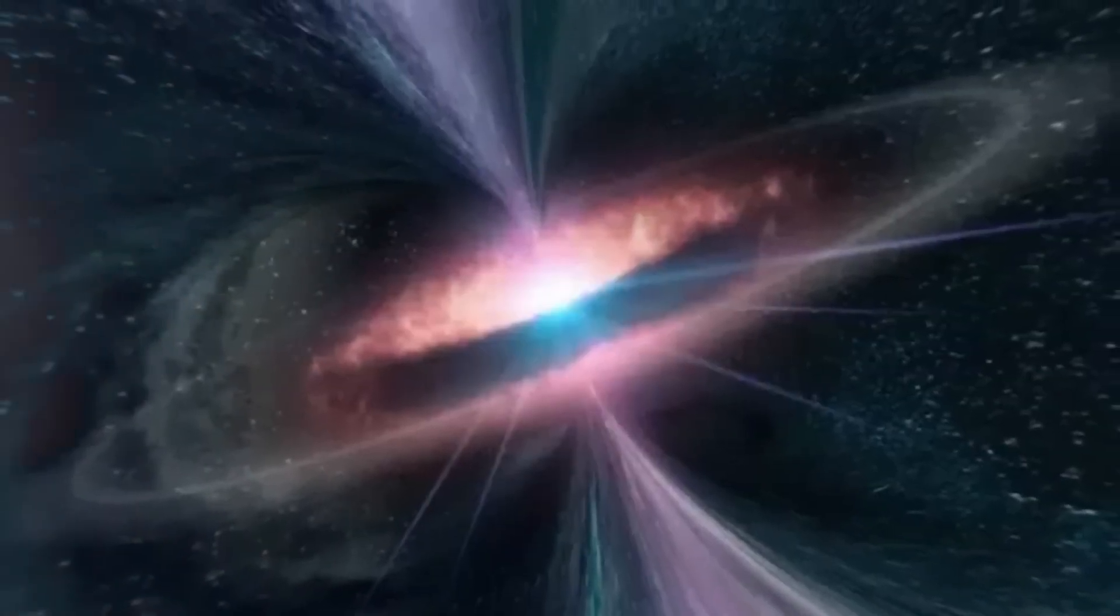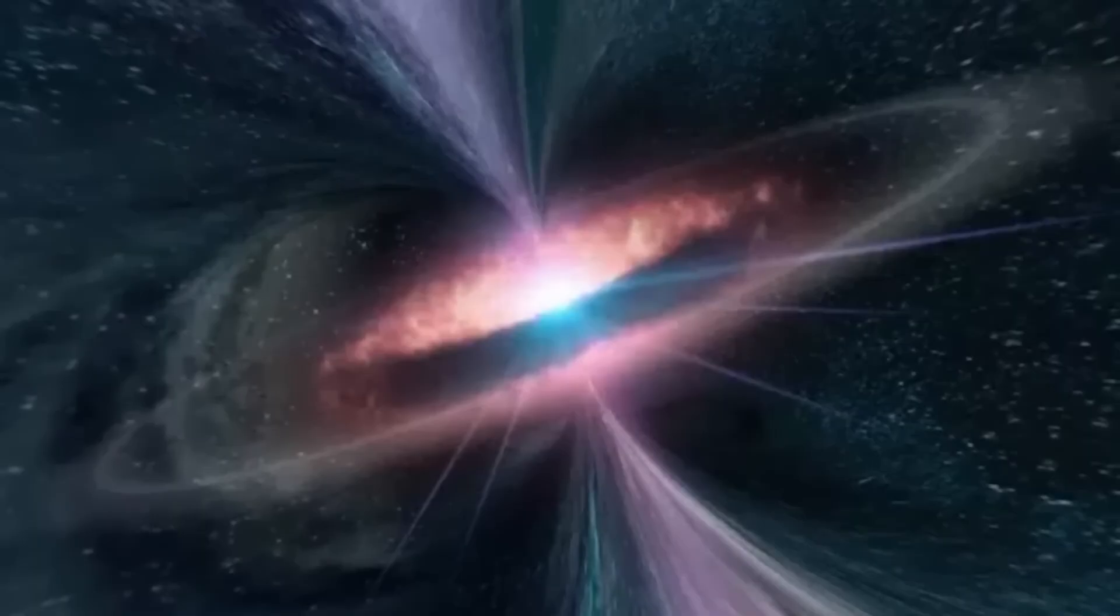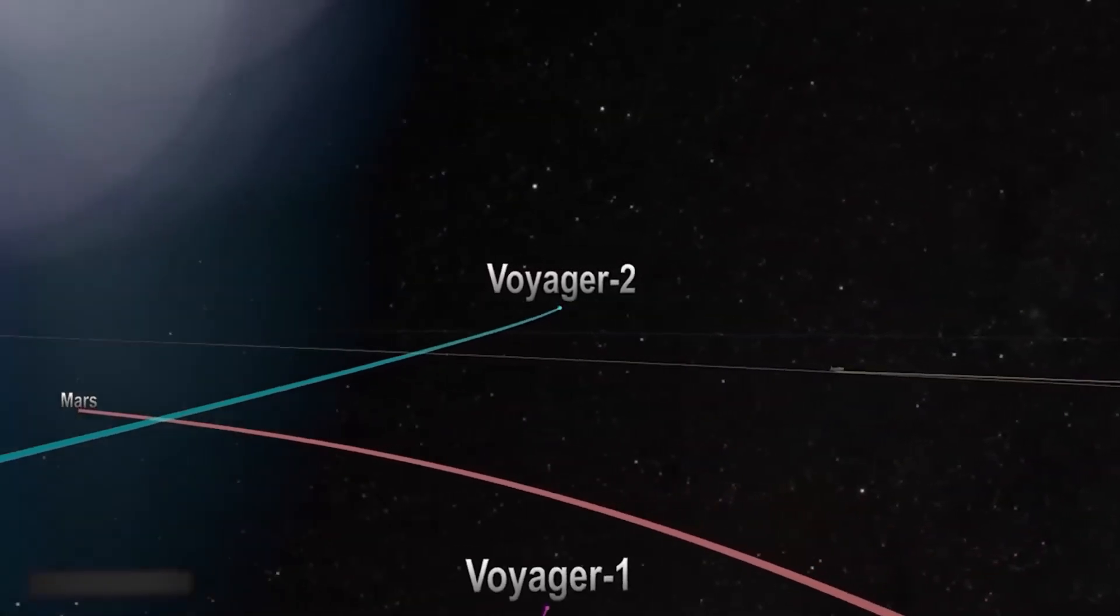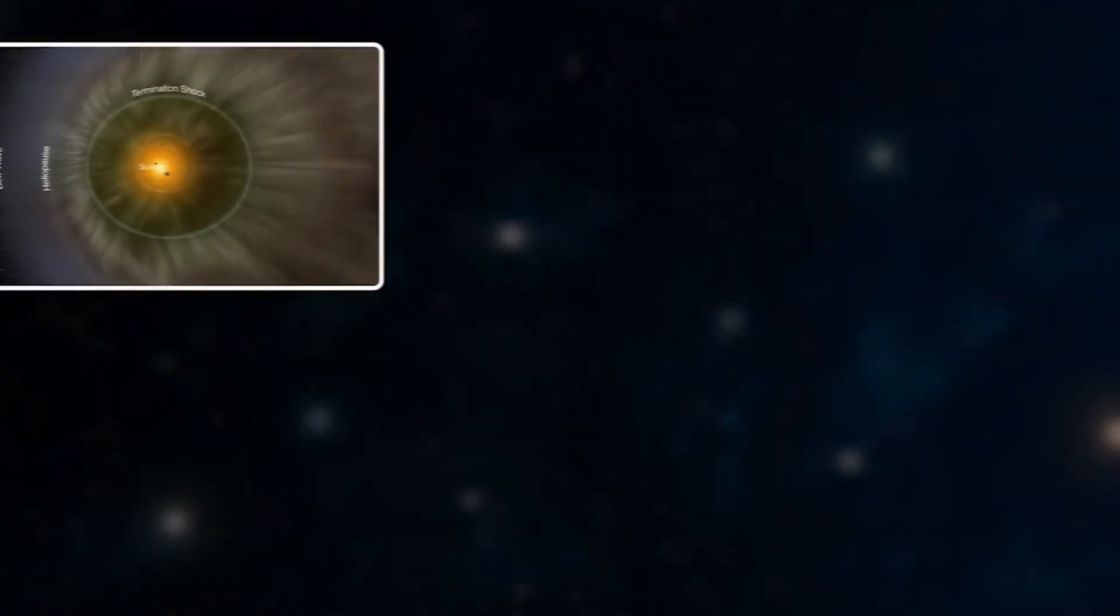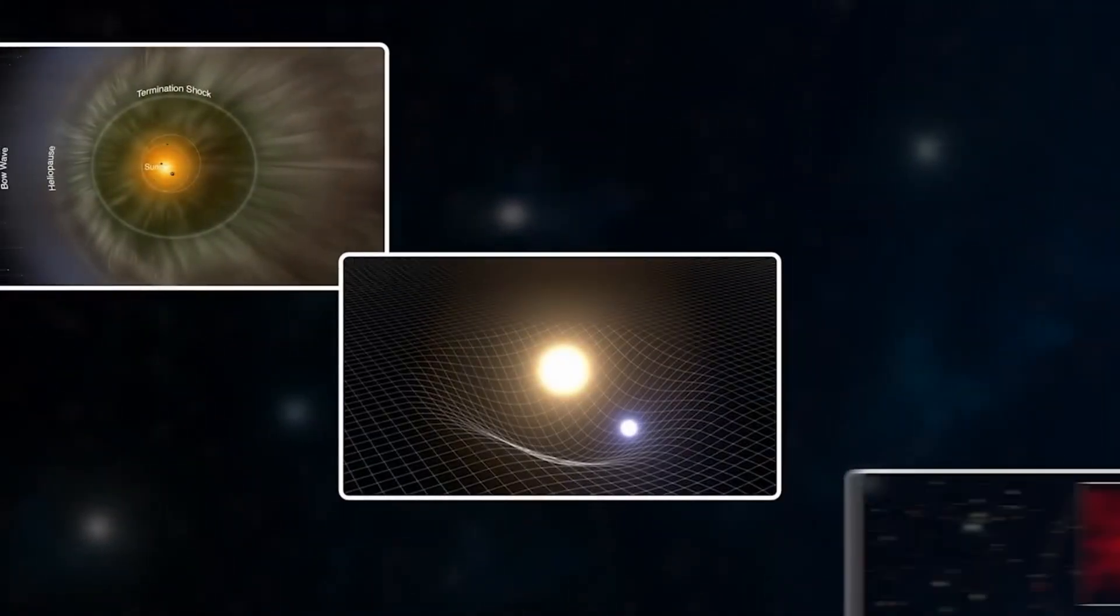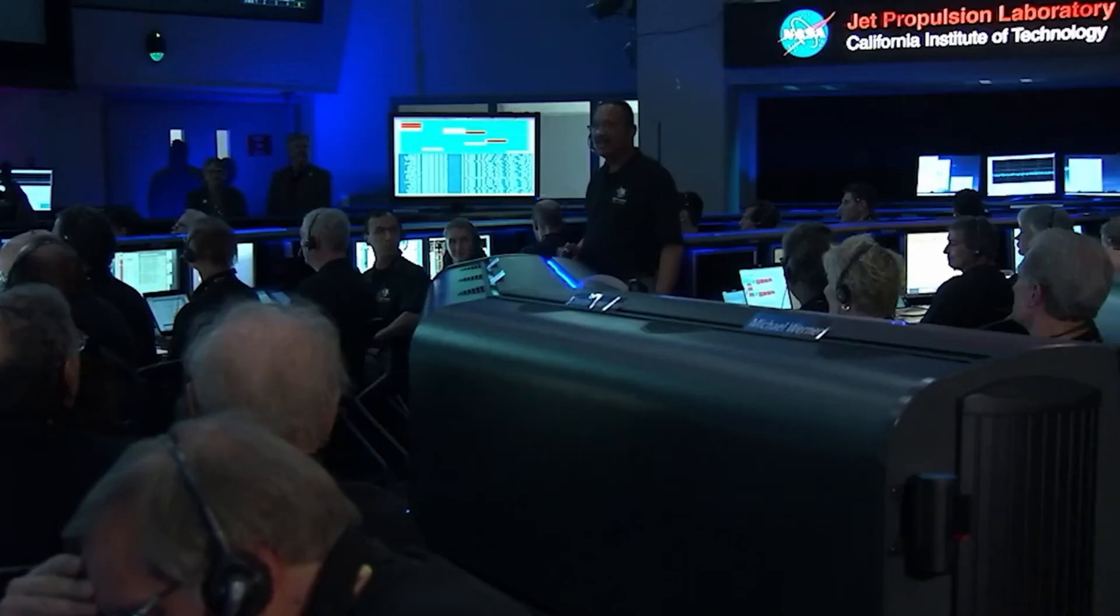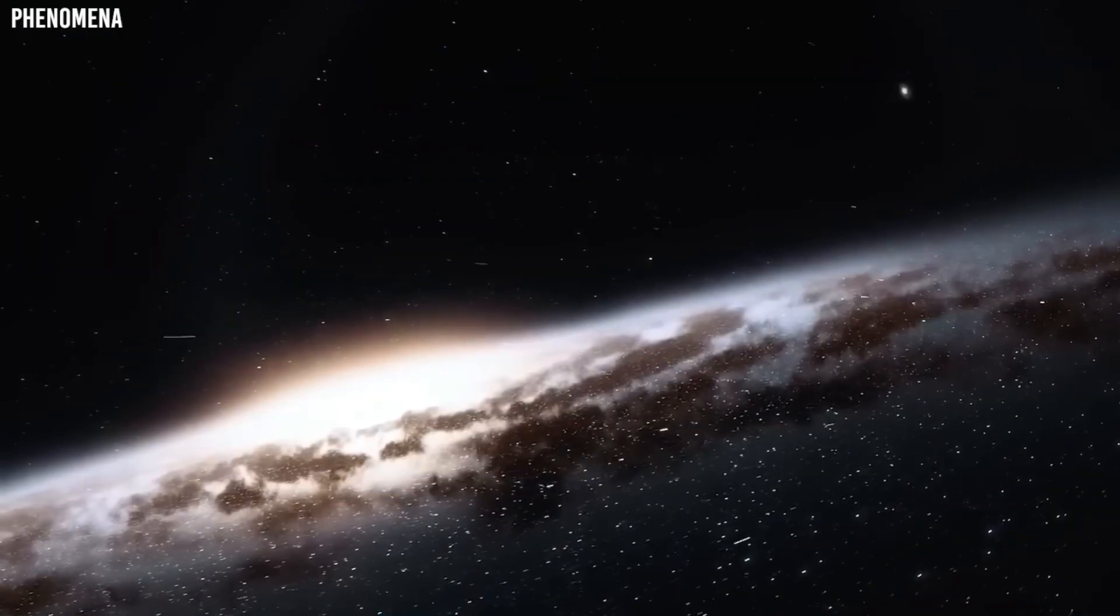If true, then the implications are staggering. We are not alone. And more than that, we've been observed for longer than we realize. Voyager 2 may have not just found something unusual. It may have crossed a line, stepped through a sensor, and woken something that had been dormant until now.